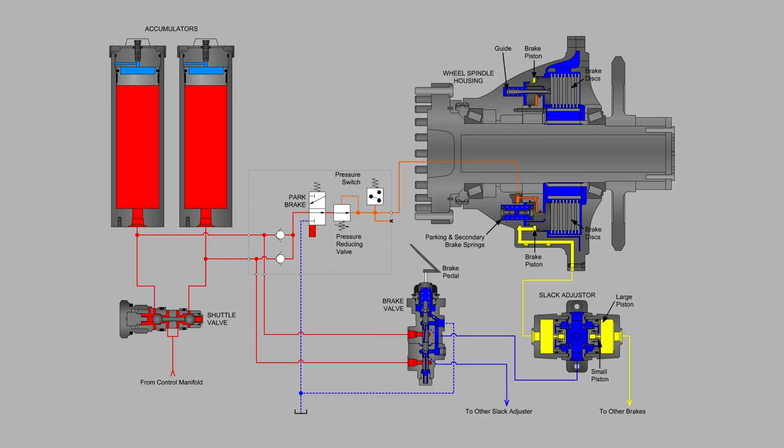In this video, we will examine the brake pedal valve, the slack adjuster, and the basic functions of the brake piston against the brake discs. This is all happening inside the wheel spindle housing for a fairly popular model of motor grader.